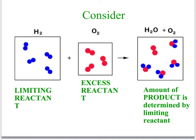The hydrogen is the limiting reactant, the oxygen is the excess reactant, and there is some of the excess reactant left at the end of the reaction. The amount of product is determined by the limiting reactant, because it limits how much product we can produce.